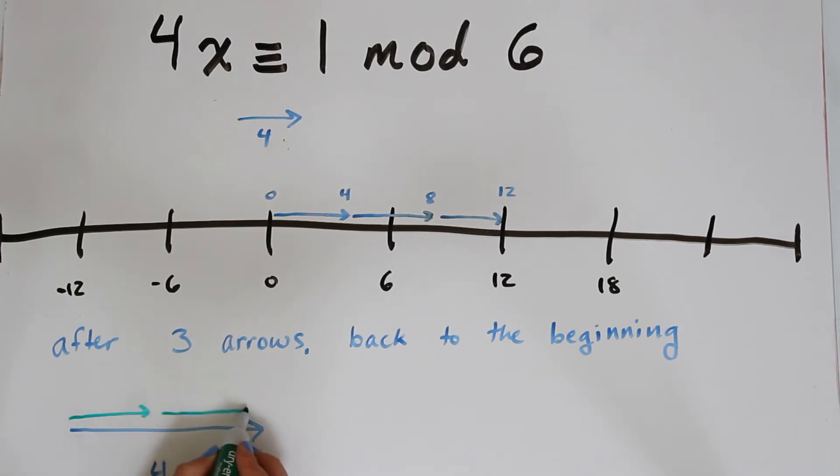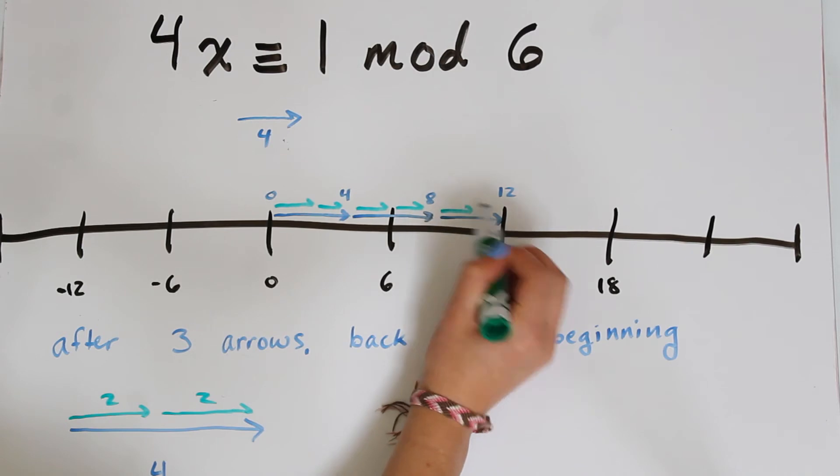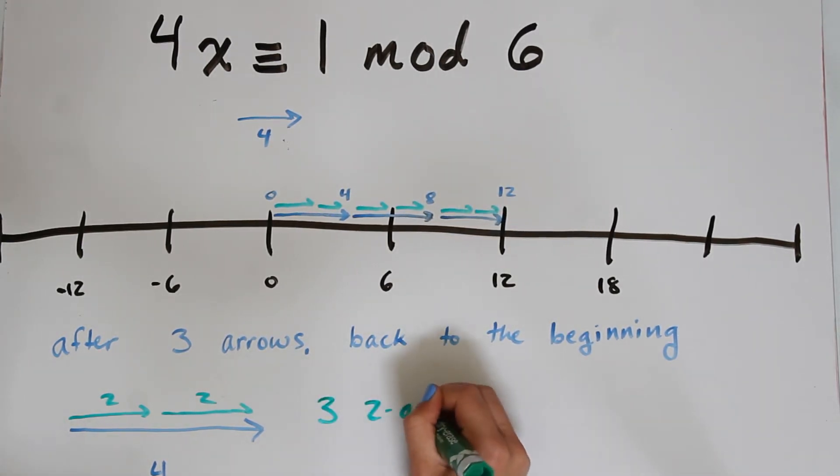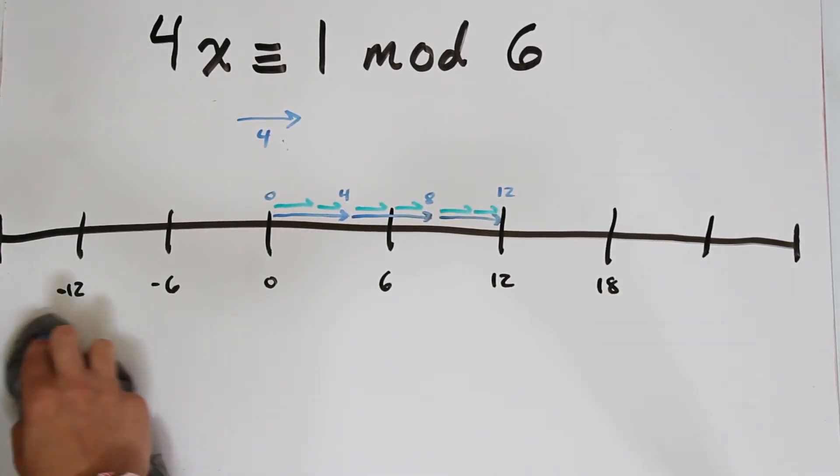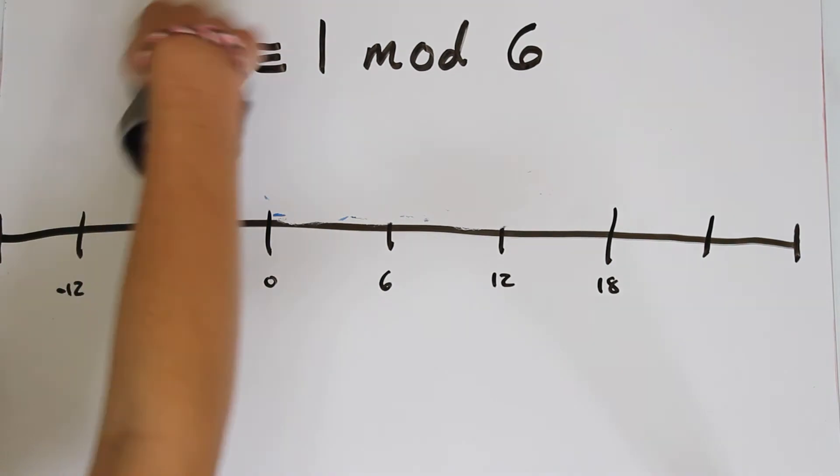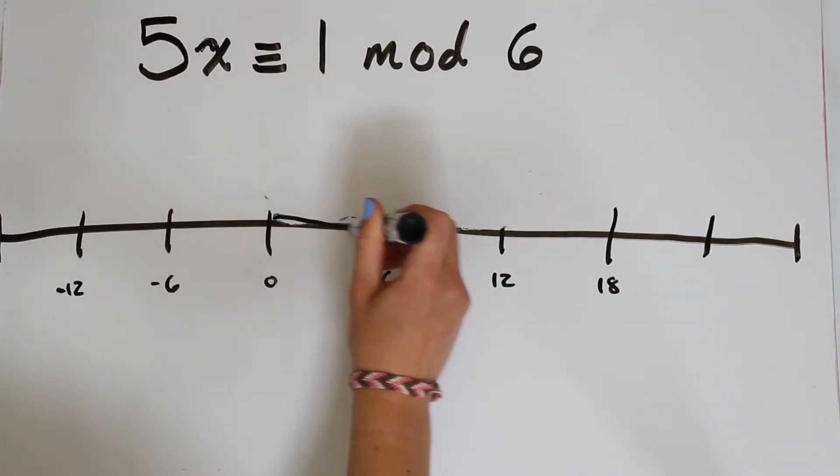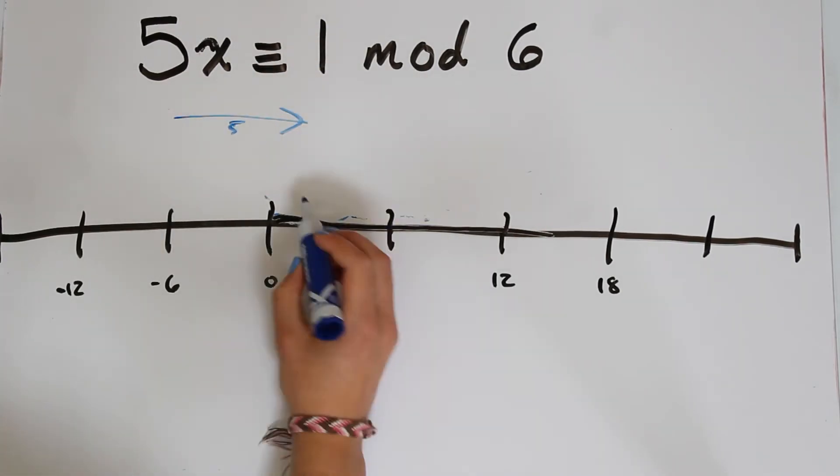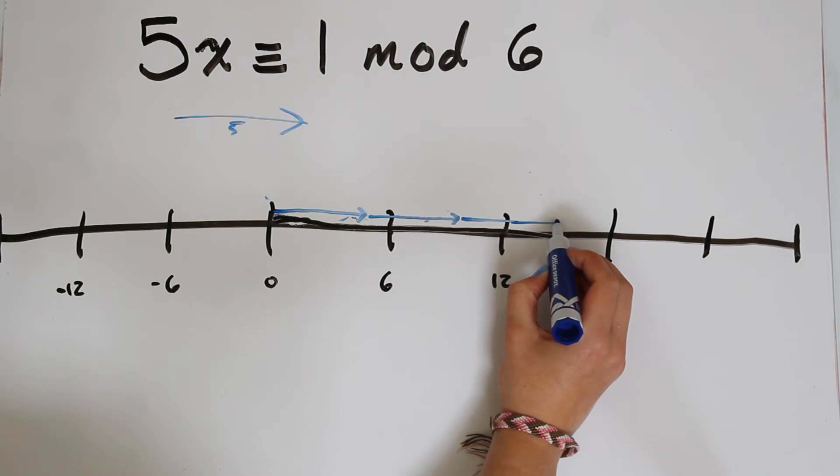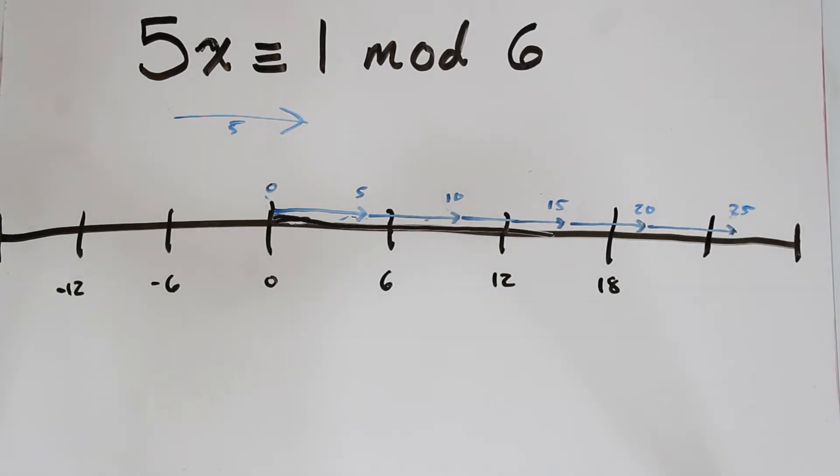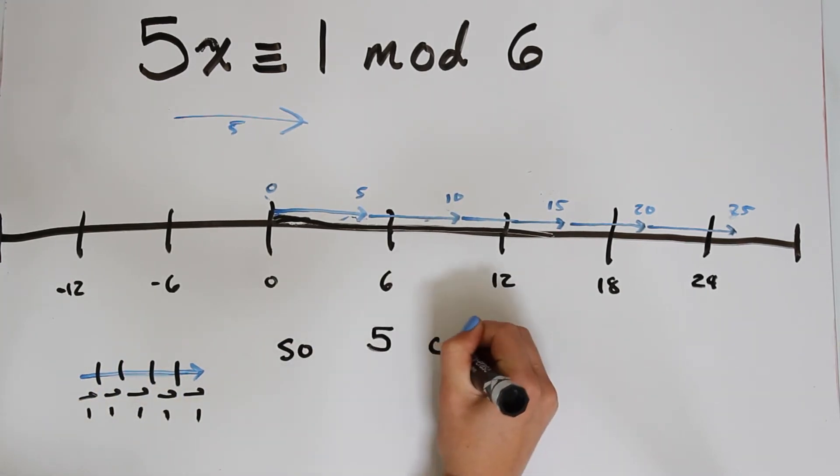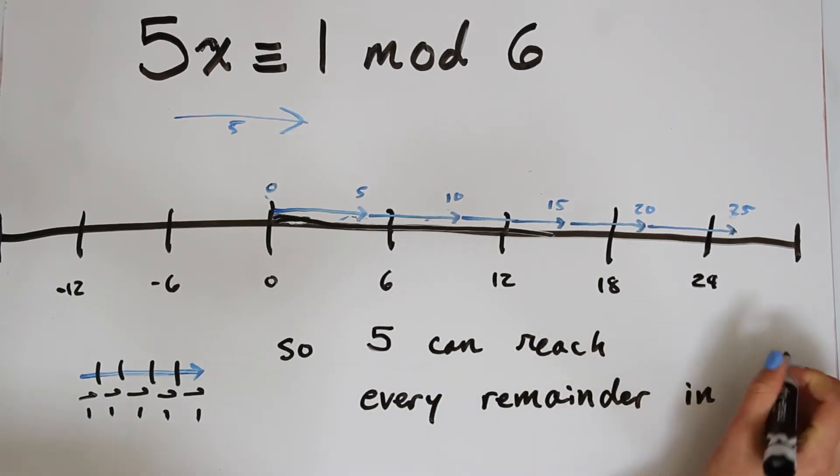We can get a better picture of this by dividing our 4 arrow into 2 2 arrows. So then we see that after 3 2 arrows we've completely filled an interval. So it takes 1 and a half 4 arrows to fill an interval of 6. Okay, one more example to get a better handle on this. So if we have 5x is congruent to 1 mod 6, we see that after 5 5 arrows we have 25 which is congruent to 1 mod 6. So 5 does have an inverse in z6. Question is why is that? Well we can see that we can divide our 5 arrow into arrows of length 1, and it takes 6 of these to fill an interval of length 6.